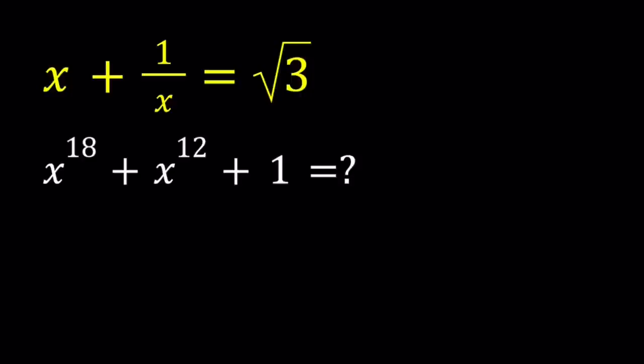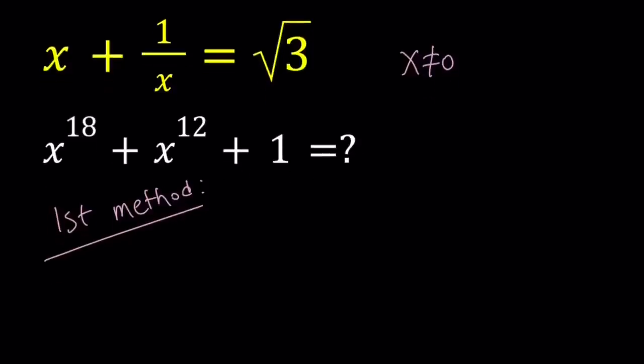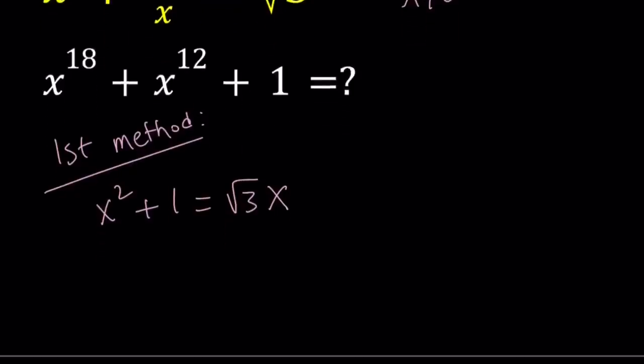I'll be presenting two methods, and here's the first one. For my first method, I'll multiply both sides by x. Obviously, x does not equal zero, we know that, because it doesn't satisfy the equation, so I can easily multiply both sides by x without hurting the equation. That gives me x squared plus 1 equals square root of 3x. It's better than making a common denominator.